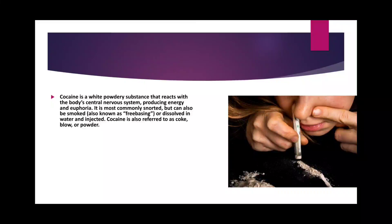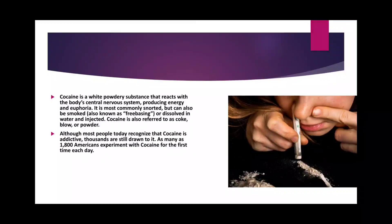The main method of misuse of cocaine is by snorting. Cocaine is a white powdery substance that reacts with the body's central nervous system, producing energy and euphoria. It is most commonly snorted, but can also be smoked — known as freebasing — or dissolved in water and injected. Cocaine is also referred to as coke, blow, or powder.